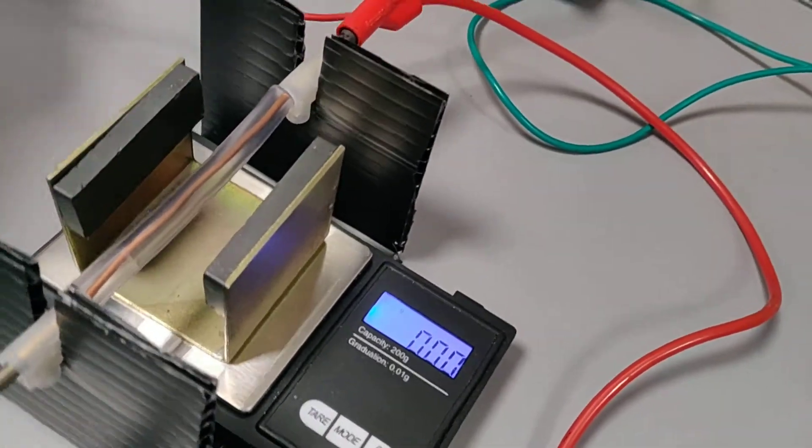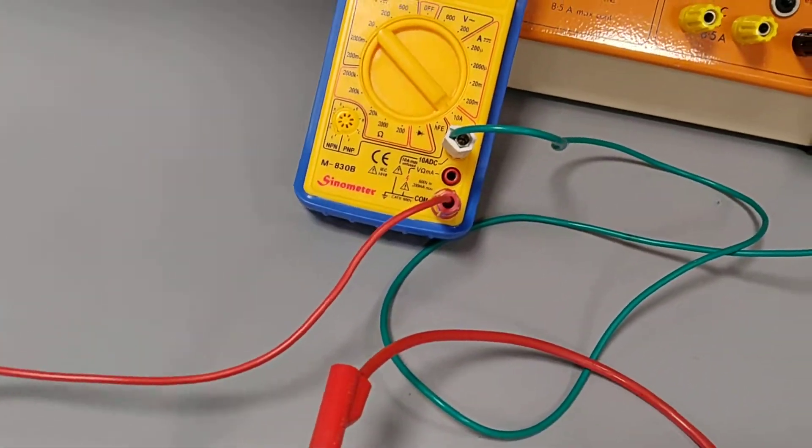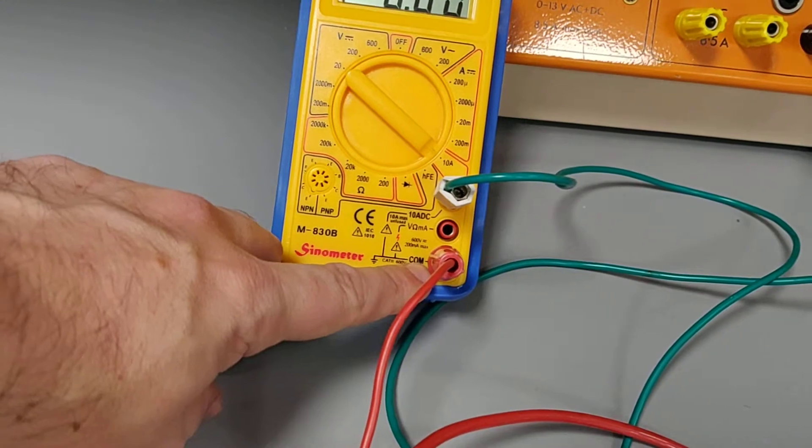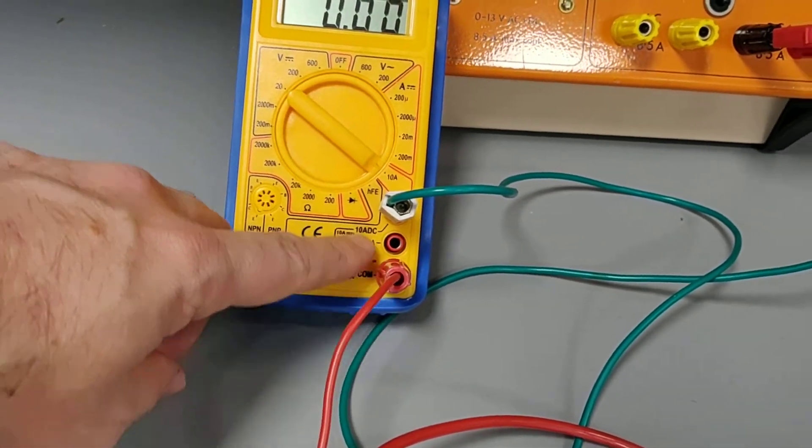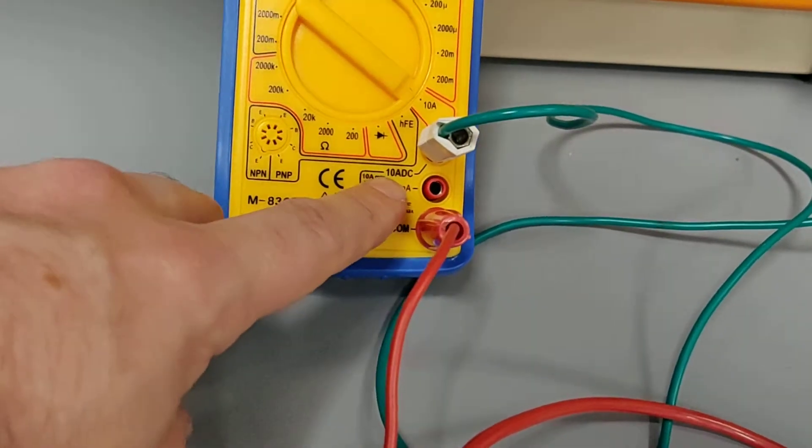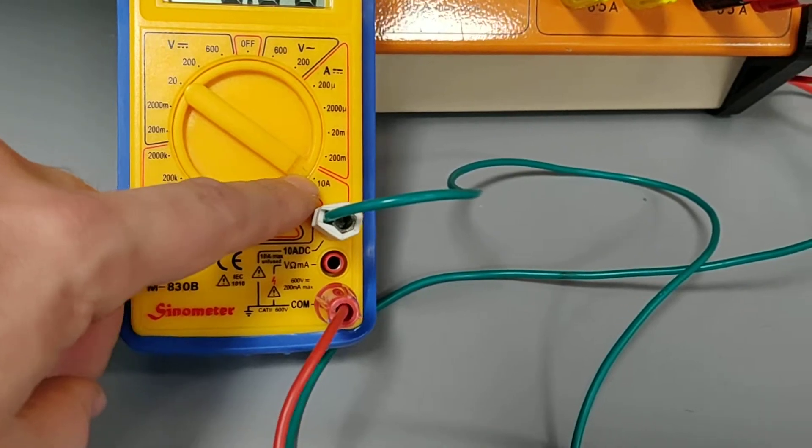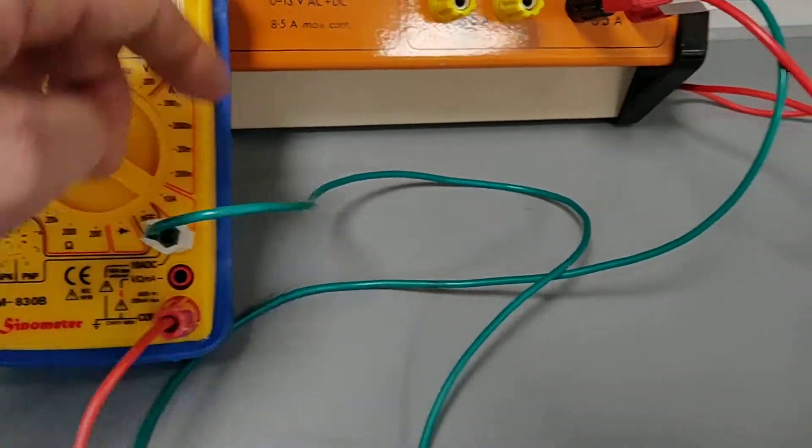So connected to that, in series, we have an ammeter. I'm using a multimeter here, and you can see the connection is to the common. The other side, the connection is to the 10-amp connector. And the setting of the multimeter is on the 10-amp setting, so we're going to be able to read between 0 and 10 amps.